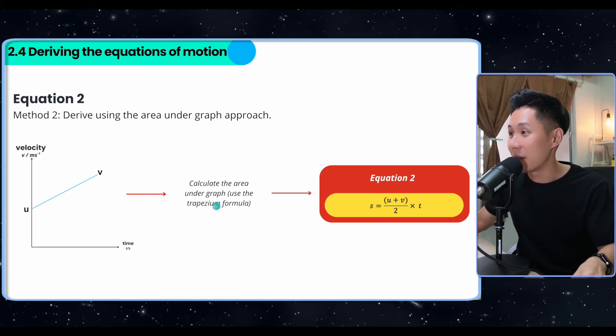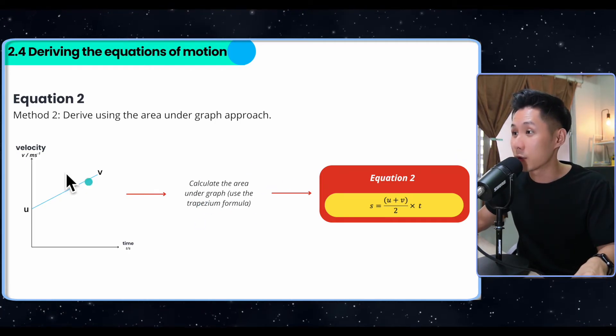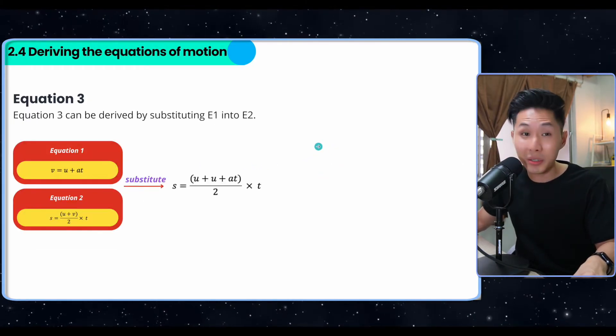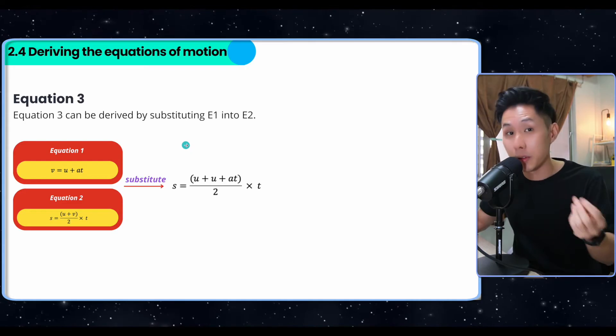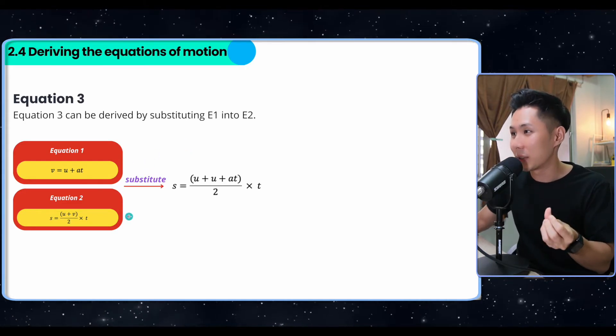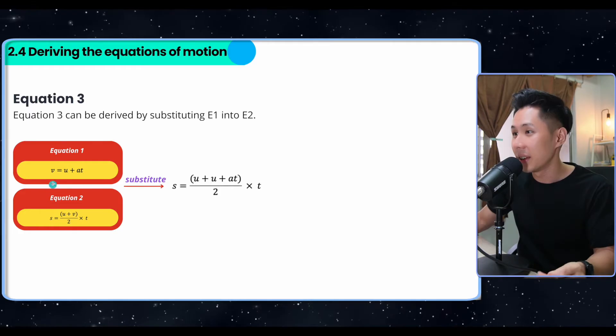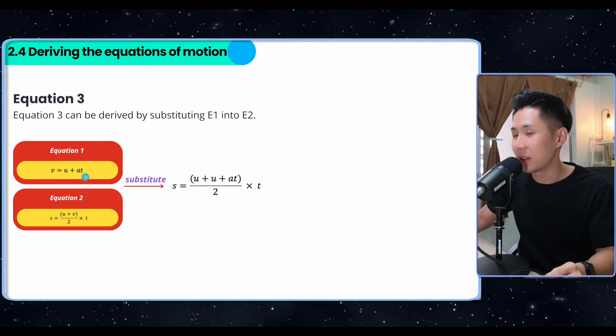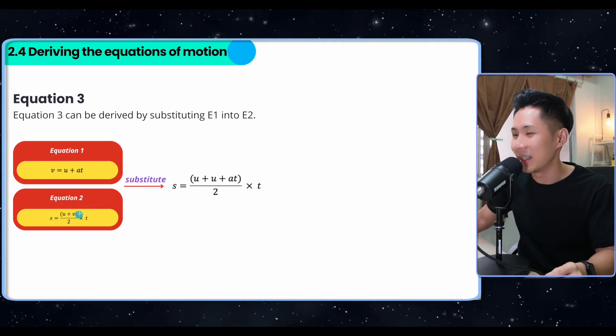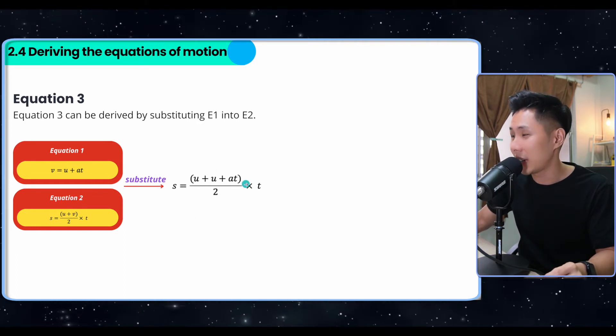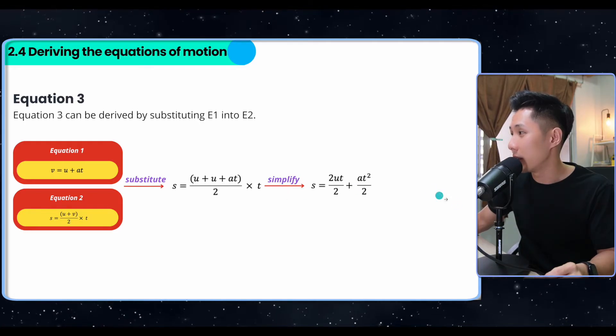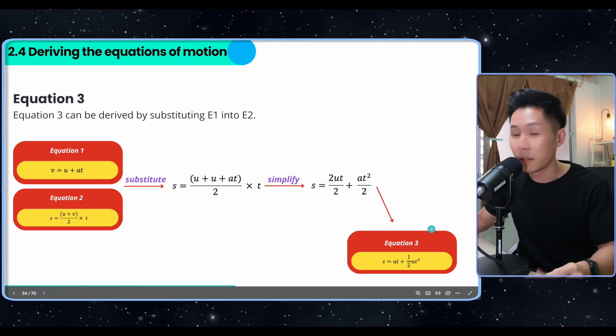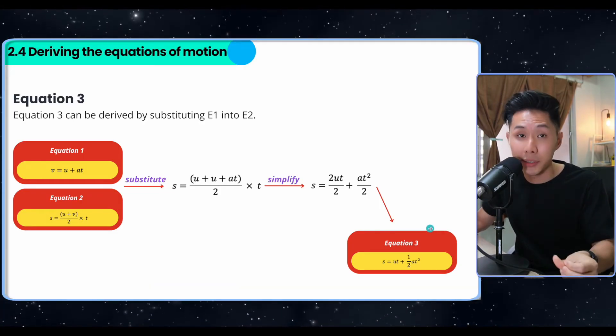Whereas you can also use the area under graph to calculate, use the trapezium formula to calculate the displacement under this velocity time graph. Equation three, it involved the usage of equation one and two. So what you need to do is just substitute equation one into equation two here. So you can see that there's a final velocity symbol here. I'm going to put v equal to u plus at into this formula. And that's what I will get and do some simplification. And then you should be able to get equation number three, which is over here. Feel free to pause the video and try to derive it all by yourself.